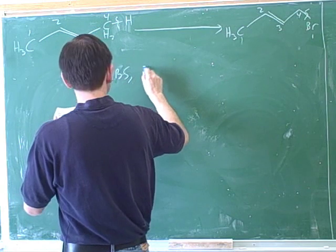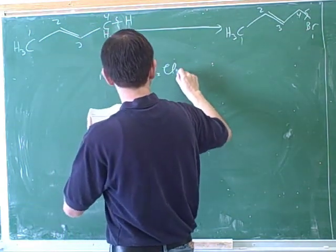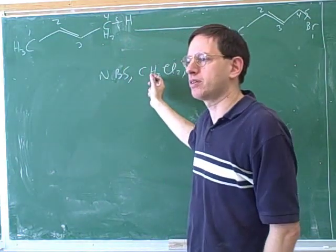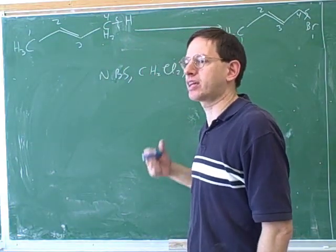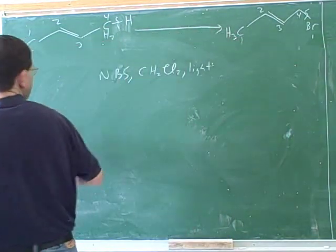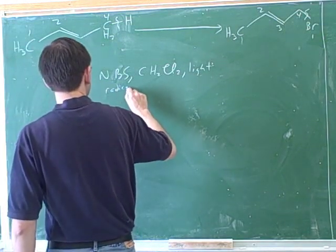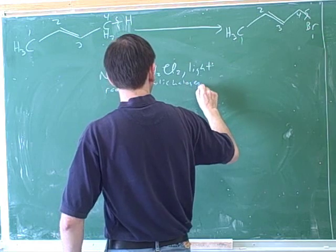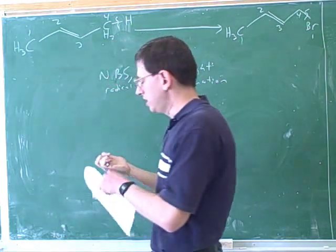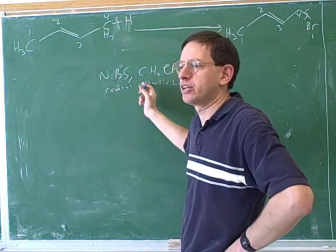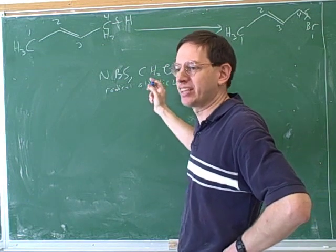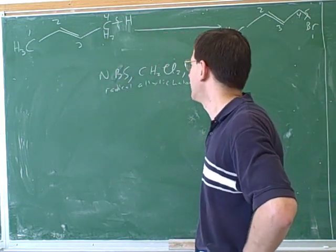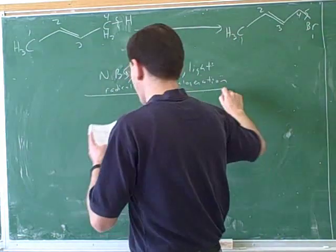So let's see. Number A was NBS. Now this here is just the solvent. Okay, so what reaction should we think of here? Radical allylic halogenation. So notice you need a double bond in order for this to work, but we're not attacking the double bond. We're attacking the allylic carbon. But if there wasn't a double bond, it wouldn't be an allylic carbon. So that was A.